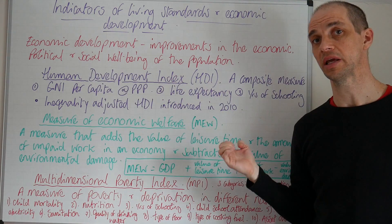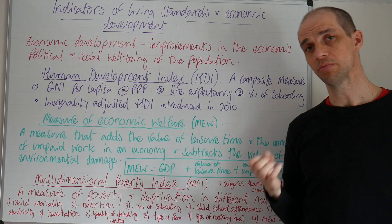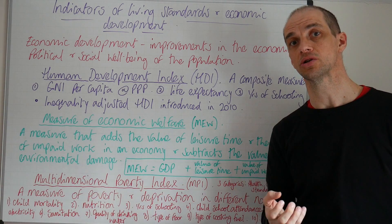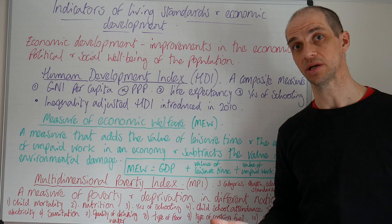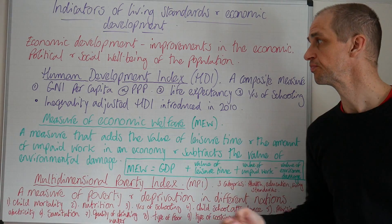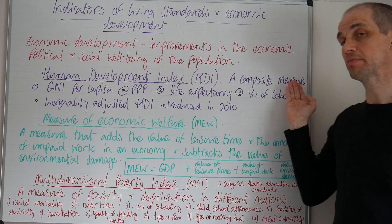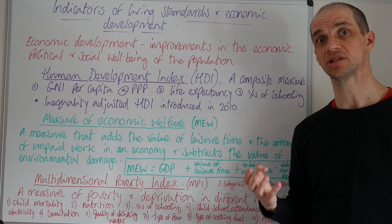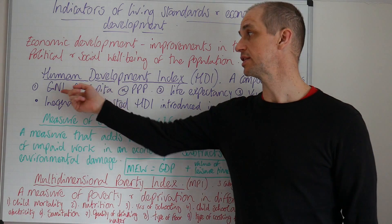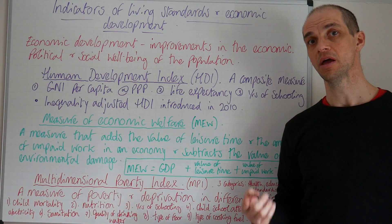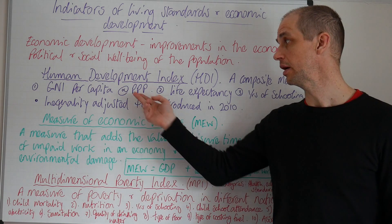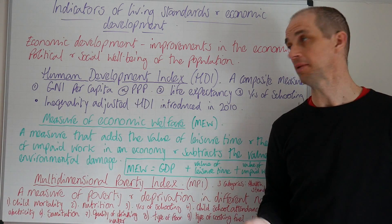The HDI is the most commonly used measure. You'll be able to look up figures on this very easily to see which countries perform well and which perform poorly. It's a composite measure, consisting of three key measurement areas. Firstly, gross national income per capita — that is real gross national income per capita at purchasing power parity.